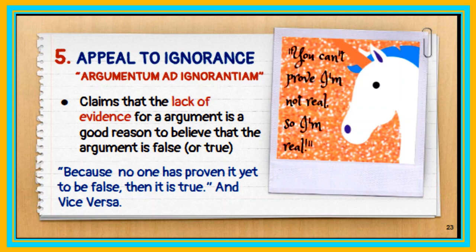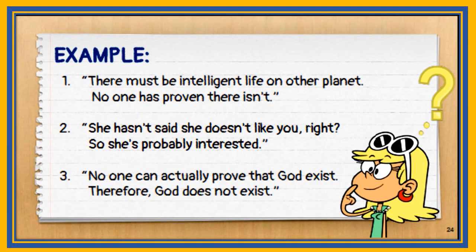Another type of logical fallacy is the appeal to ignorance, or argumentum ad ignorantiam. It claims that the lack of evidence for an argument is a good reason to believe it is true or false. Examples: 'There must be intelligent life on other planets — no one has proven there isn't, therefore it is true.' Also, 'She hasn't said she doesn't like you, so she's probably interested.' And, 'No one can actually prove that God exists, therefore God does not exist.'